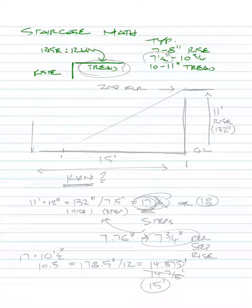So stair tread and rise. First thing you want to know is how long or how high are you trying to go, right? So if we draw it kind of like this, you know, this is our ground level, GL, ground level, and this is our floor level, second floor.